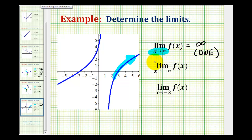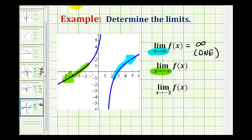For the second example, we have the limit as x approaches negative infinity of f of x. So now we're moving to the left along the function. Notice how the function is decreasing without bound, and therefore the function is approaching negative infinity as x approaches negative infinity. Again, this limit does not exist.